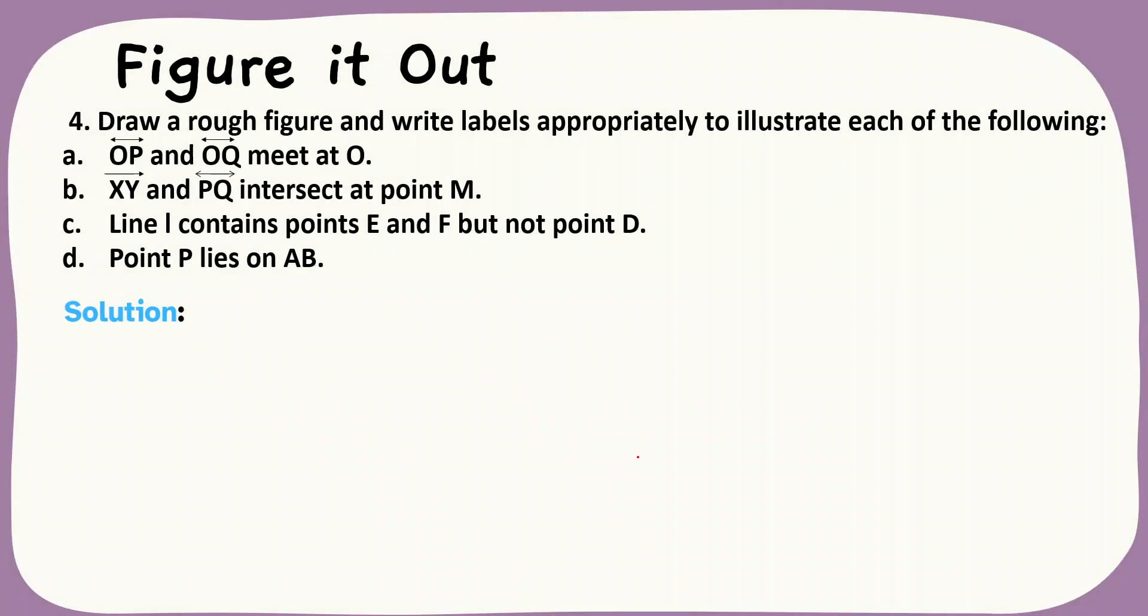Let us see question number four. Draw a rough figure and write labels appropriately to illustrate each of the following. We need to write OP line and OQ meets at O. Next one is ray XY and line PQ intersect at point M. Line L contains points E and F but not point D. Point P lies on AB.